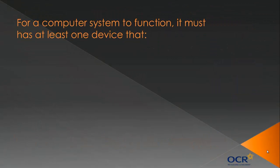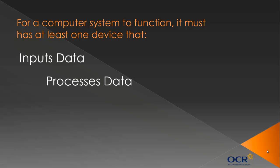For a computer system to function it must have at least one device for input, process, and output data — and this cycle gets repeated. People may also give a fourth thing that's essential: you have to store data as well. That's sort of the four processes that happen in a computer.